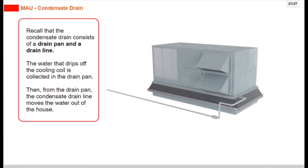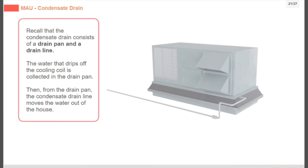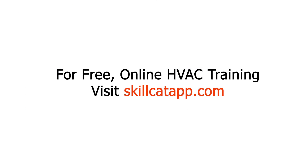Recall that the condensate drain consists of a drain pan and a drain line. The water that drips off the cooling coil is collected in the drain pan. Then, from the drain pan, the condensate drain line moves the water out of the house.